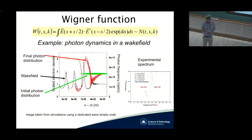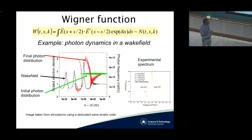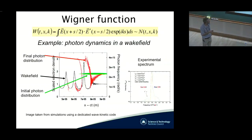Here is an example: a laser pulse driving a wakefield in plasma. The Wigner function is given by this definition. We have a laser pulse — the green one is the original laser pulse going into the plasma. It has a small bandwidth, so all photons have approximately the same momentum. The black curve is the plasma wave the laser pulse drives. Driving the wave takes energy, so photons at the front lose energy and momentum. Photons at the rear are not involved in pushing the plasma wave, so they don't lose much energy. At the very rear, the plasma density becomes large and the plasma wave starts pushing the photons, so those photons gain energy.